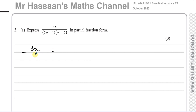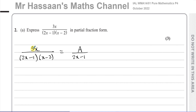So you have 3x over (2x−1)(x−2). We can see that there are no repeated factors — it's not like one of these brackets is squared. We can write this as a constant over (2x−1) because this is a proper fraction. The first thing we should always check is: is this a proper fraction?